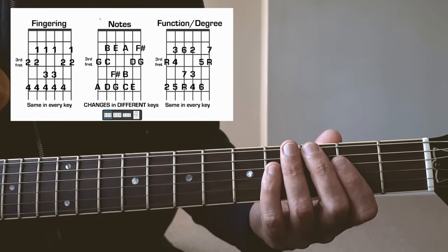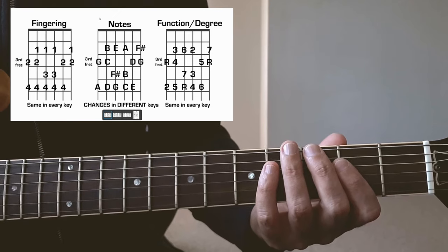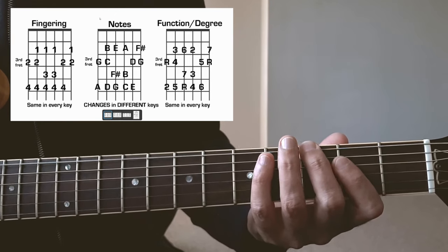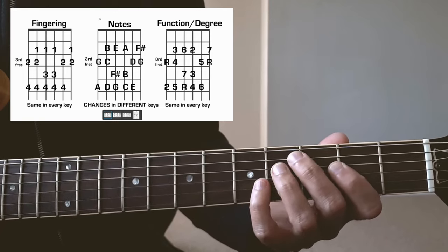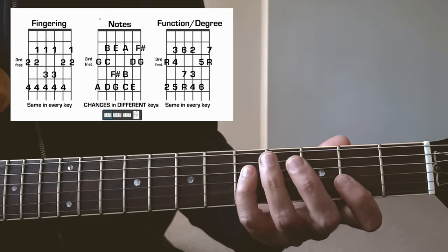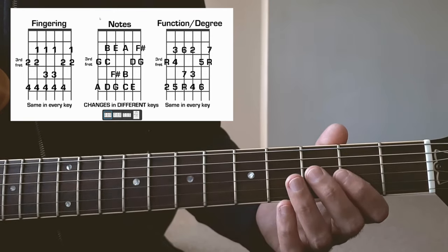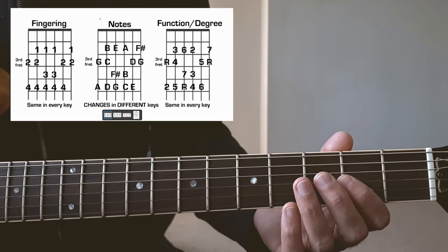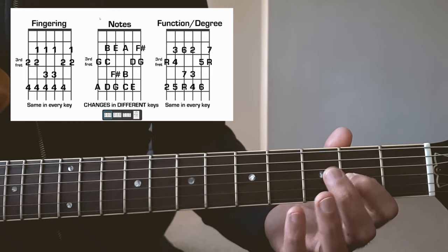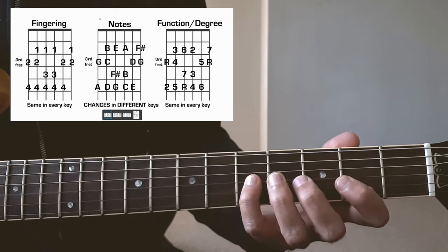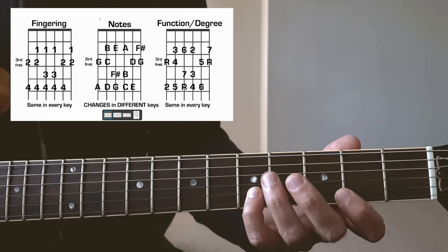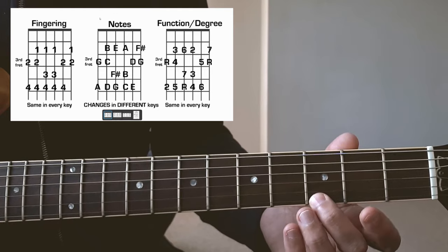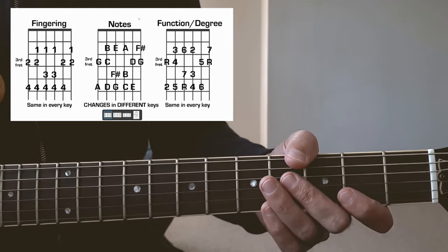The last one is the function, so basically the intervals and the degrees contained within that scale. So the distance between the note and the root. So we'll have the root, the second, the third, the fourth, the fifth, the sixth, major seven in this case, the root again. When I go past the octave, obviously if I'm thinking about extensions, I can call that the ninth, the tenth, the eleventh, the fifth usually is still called the fifth, the thirteenth and major seven and the octave.